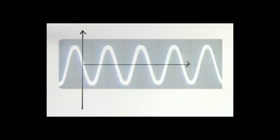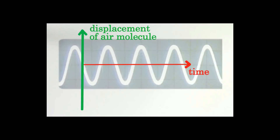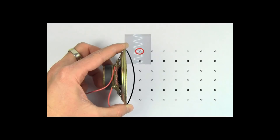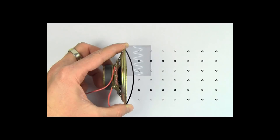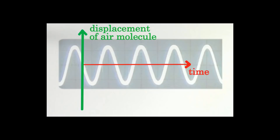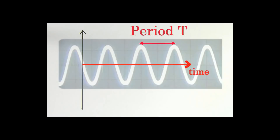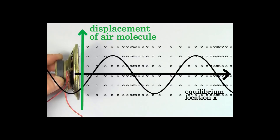So be careful. For a sound wave, a displacement versus time graph represents what that particular air molecule is doing as a function of time, and on this type of graph the interval between peaks represents the period of the wave. But a displacement versus position graph represents a snapshot of the displacement of all the air molecules along that wave at a particular instant of time, and on this type of graph the interval between peaks represents the wavelength.